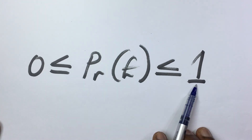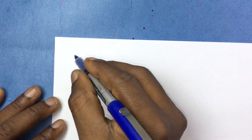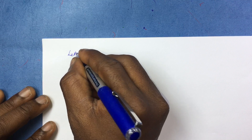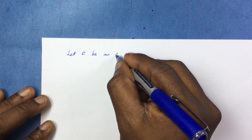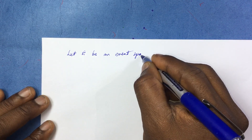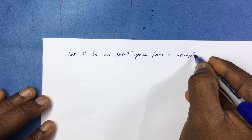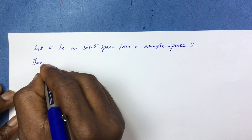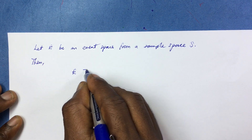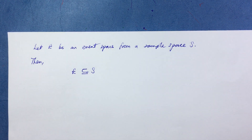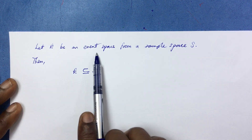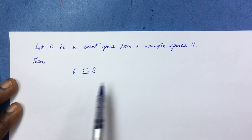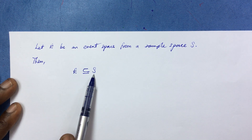Let us begin with showing how this is true. Let E be an event space from a sample space S. Clearly, what follows is that E is a subset of S. This is true from set theory: event spaces are subsets of sample spaces. So if E is an event space drawn from a sample space S, then E is clearly a subset of S.